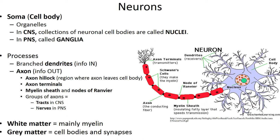The plasma membrane surrounding the axon is called the axolemma, while the cytoplasm is called the axoplasm. The axon forms at a tapered area called the axon hillock — this is the trigger zone because graded potentials must reach this area before they can be converted into action potentials. As the axon approaches the next cell, fine extensions branch from its end forming telodendria, each ending in an axon terminal, also called the synaptic terminal.